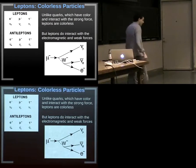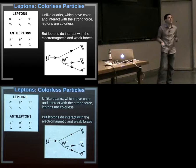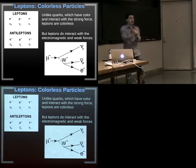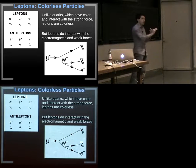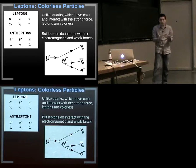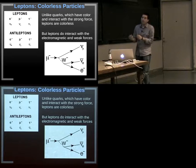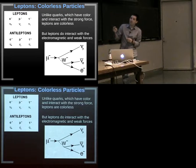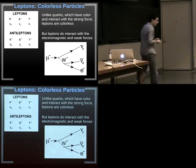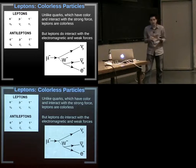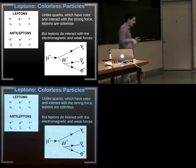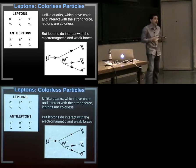Leptons, on the other hand, don't have color and so don't participate in strong interactions. Leptons participate in weak, electromagnetic, and gravitational interactions — but not the strong force. The leptons are the electron, muon, and tau, all negatively charged, with positively charged antiparticles. Then there are three generations of neutrinos: electron neutrino, muon neutrino, and tau neutrino, plus their anti-neutrinos.